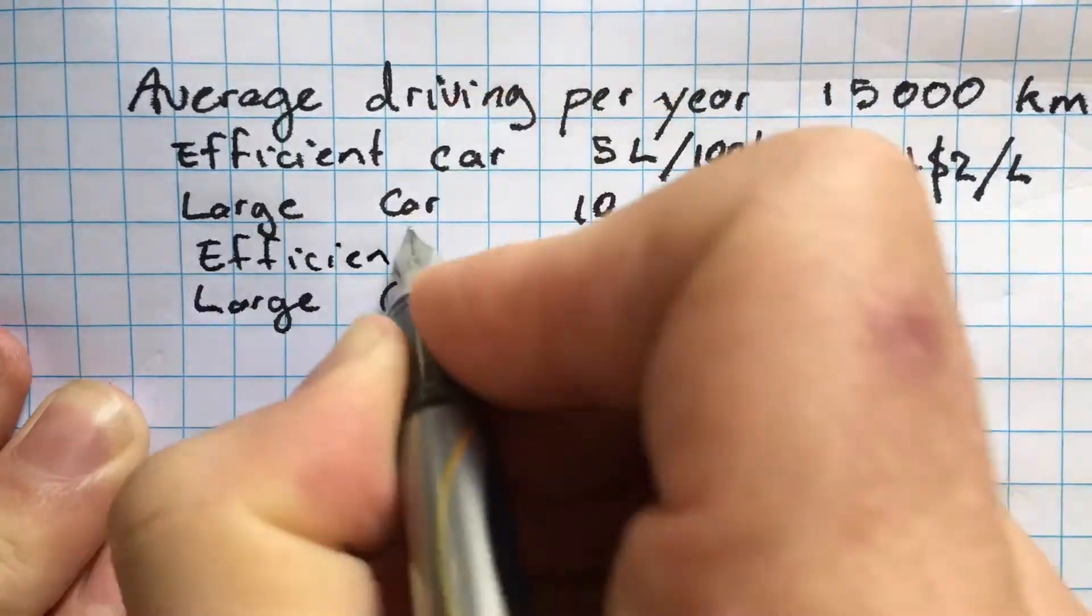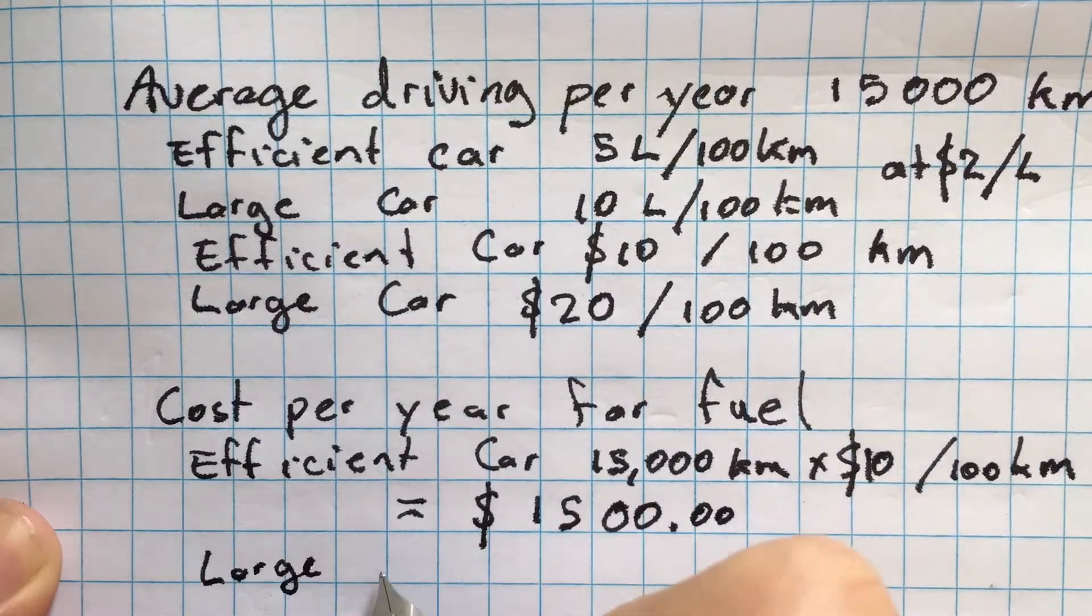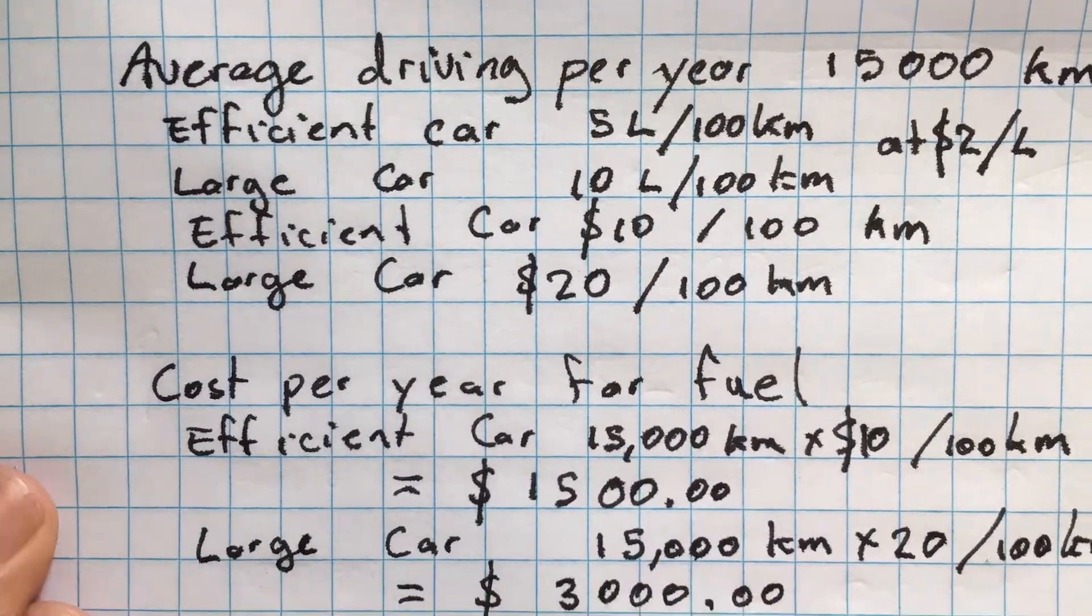The average New Zealander drives about 15,000 kilometers per year and petrol costs about $2. You can have a large car or a smaller efficient car.